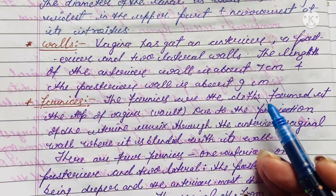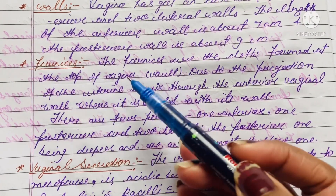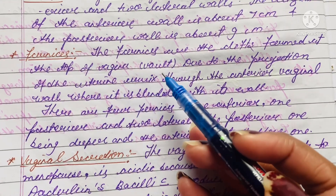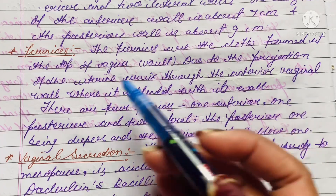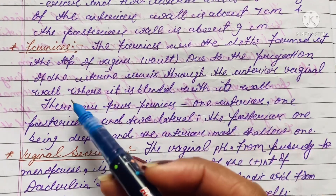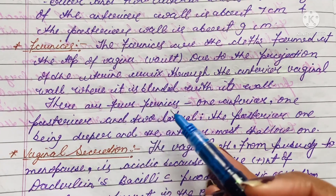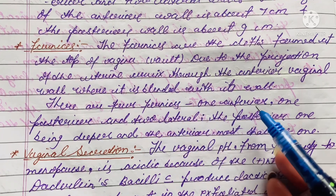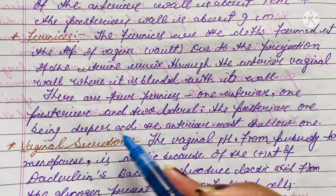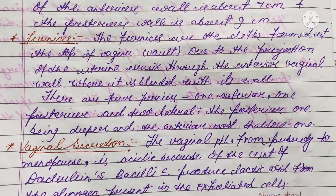Now let's see the vaginal fornices. The fornices are the clefts formed at the top of the vaginal wall due to the projection of the uterine cervix through the anterior vaginal wall. There are four fornices — one anterior, one posterior, and two lateral. The posterior one is deeper and the anterior is the most shallow.